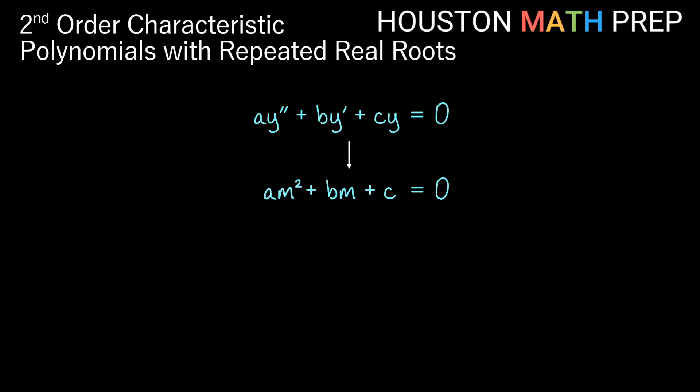Hey everyone, Houston MathPrep here going over second-order homogeneous linear equations with constant coefficients. We're looking at cases where the characteristic polynomial gives us repeated real roots.